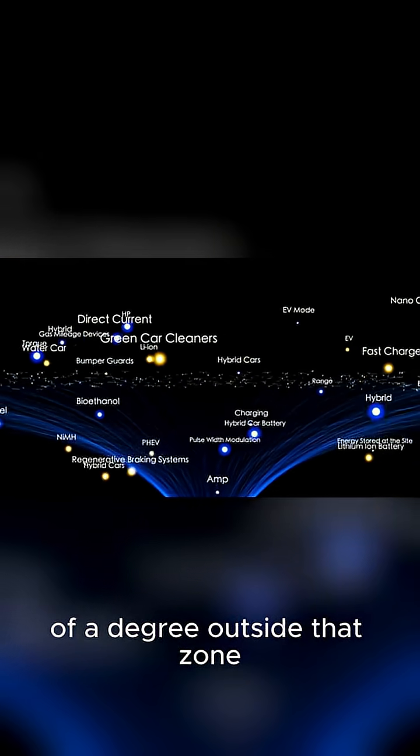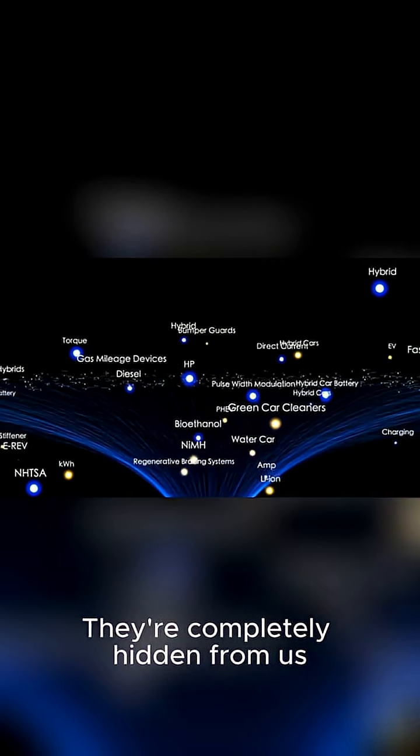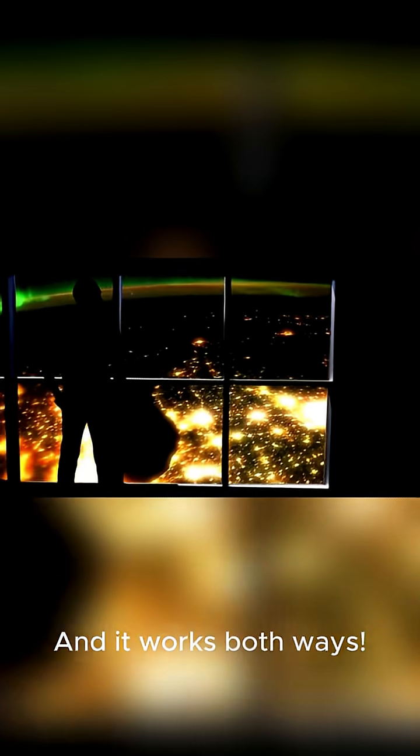If a star system is just a fraction of a degree outside that zone, we can't see its planet's transit. They're completely hidden from us, and it works both ways.